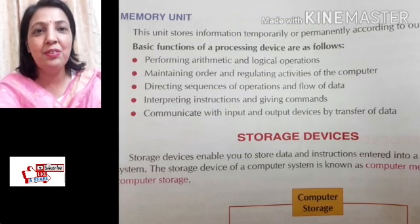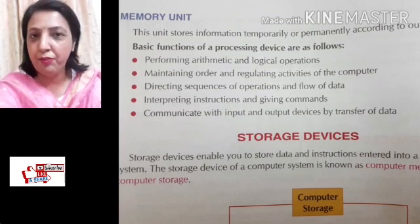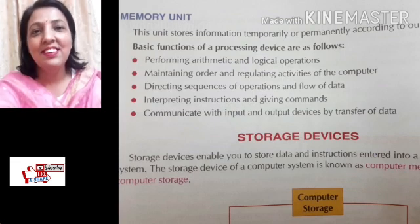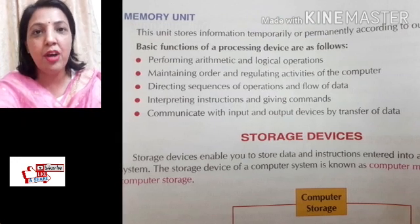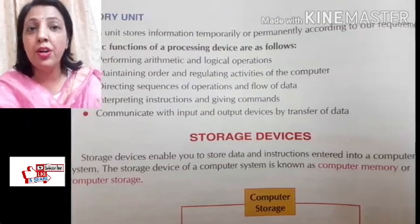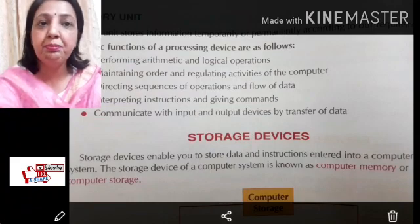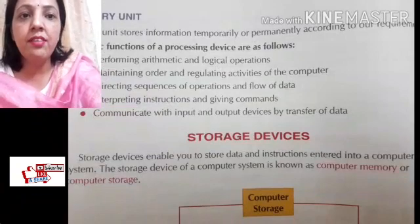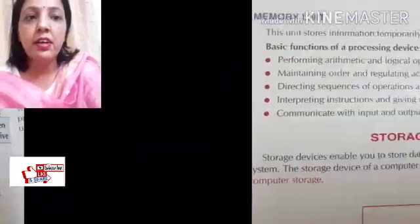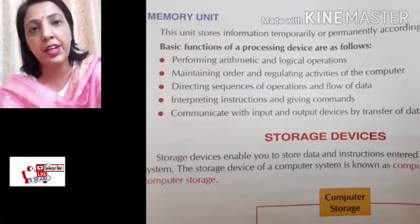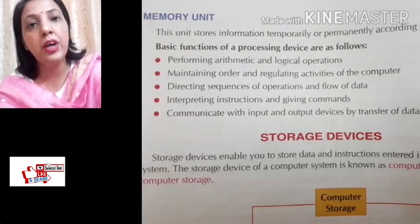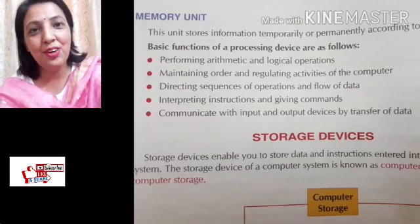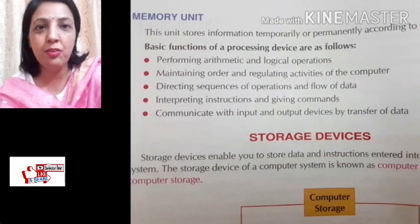To sum up the basic functions of the processing unit: first, it performs arithmetic and logic operations. Second, it maintains the order and regulates all activities of the computer — like a brain managing what is happening and in what sequence. Third, it directs the sequence of operations and the flow of data — managing which data is processed when, how it is stored, and how the output is shown on the screen.